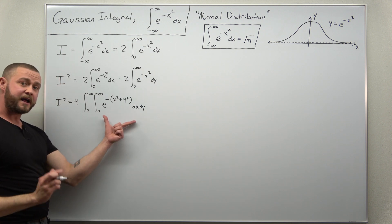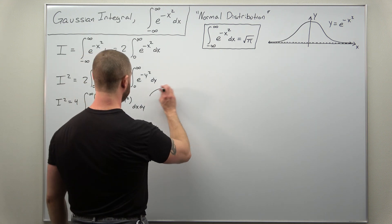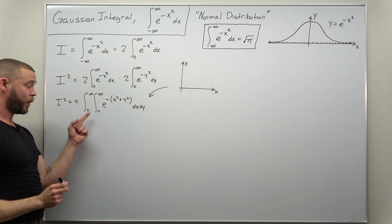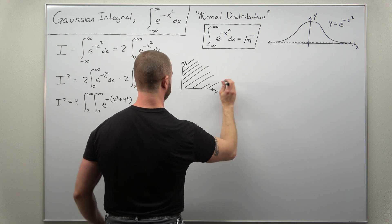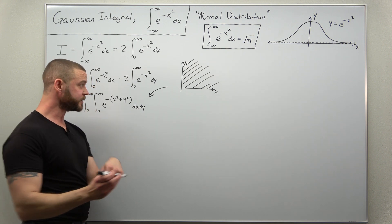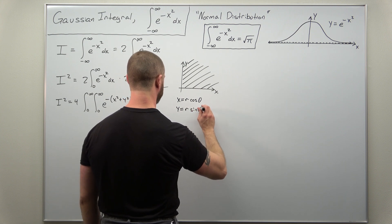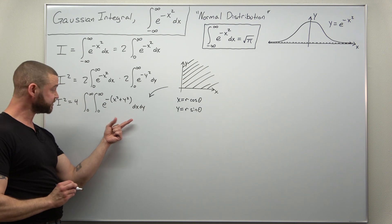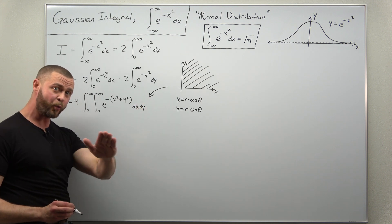Now we're going to evaluate this double integral by converting to polar coordinates. Let's sketch what our region of integration looks like: x goes from zero to infinity and y goes from zero to infinity, which is the entire first quadrant. We'll introduce the coordinate transformations: x equals r cosine theta, y equals r sine theta. The key algebraic relationship here is that x squared plus y squared simplifies to r squared, which is exactly what appears in our exponent.